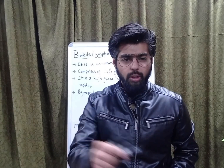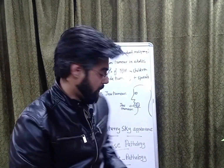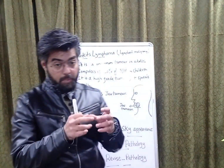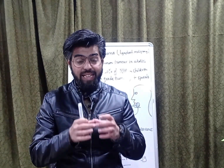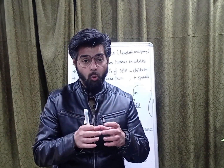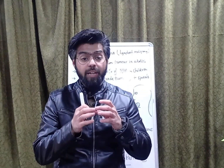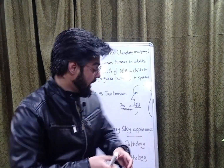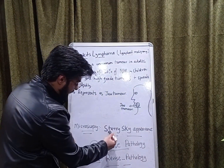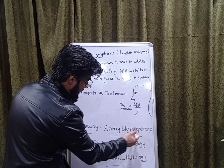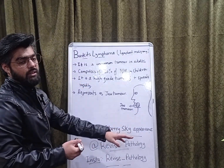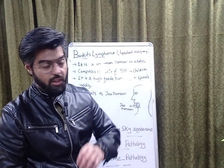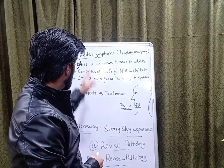Regarding microscopy — when we take a smear and examine it under the microscope — the microscopic picture of Burkitt's lymphoma shows a starry sky appearance. You will find a starry sky appearance in the smear.